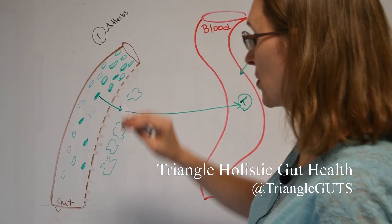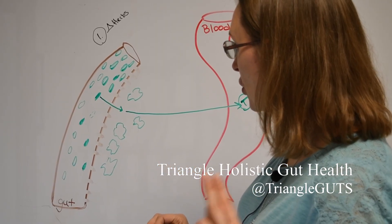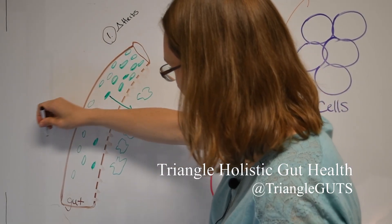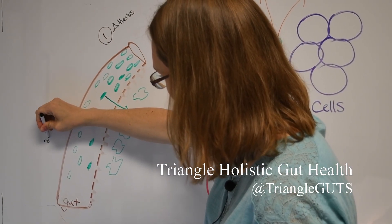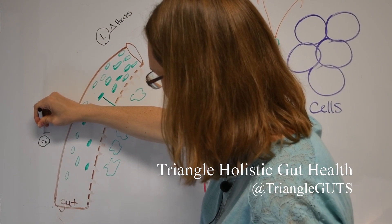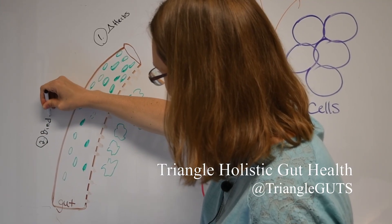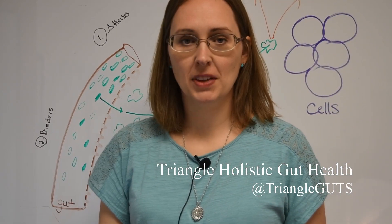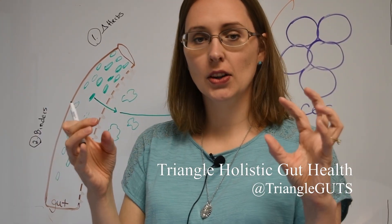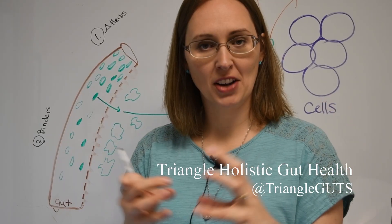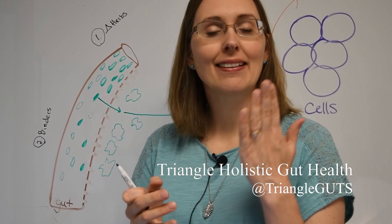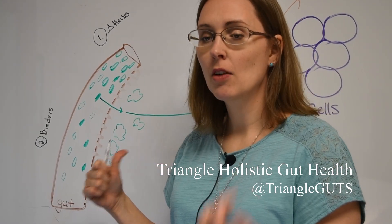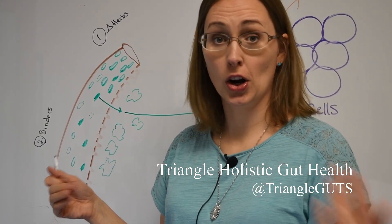Number two is you can take binders. You could take a binder or something that will attract those toxins and those fragments of bacteria and yeast like glue, and that way you can just poop it out, no harm no foul, and it doesn't get a chance to tick off your immune system. The most famous one that I know of for this is charcoal. Activated charcoal is dirt cheap, it's like 10 bucks for a bottle, and it's very very effective.